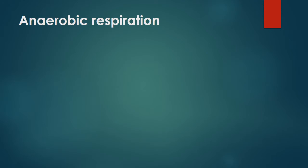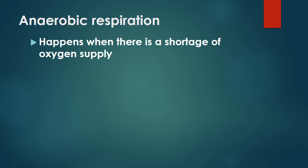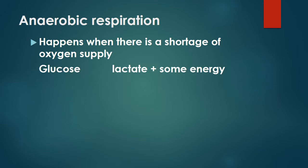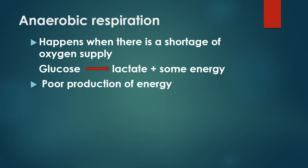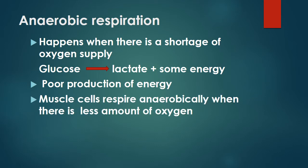Anaerobic respiration happens when there is a shortage of oxygen supply. Glucose is converted to lactate plus some energy. There is a poor production of energy compared with aerobic respiration. Muscle cells respire anaerobically when there is a limited amount of oxygen.